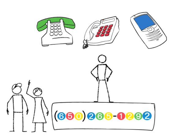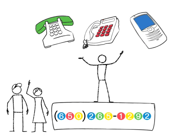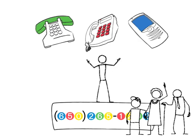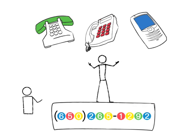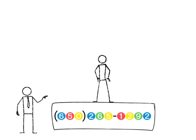When your friends call, have it ring your home and cell phones. When your family calls, all your phones. And when your chatty neighbor calls, have it go straight to Google voicemail.